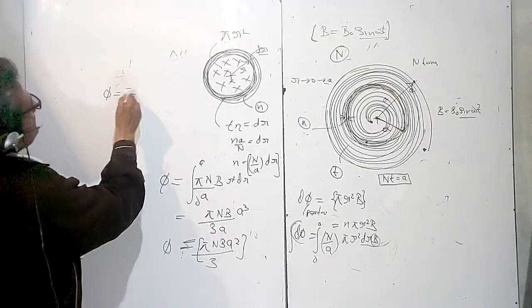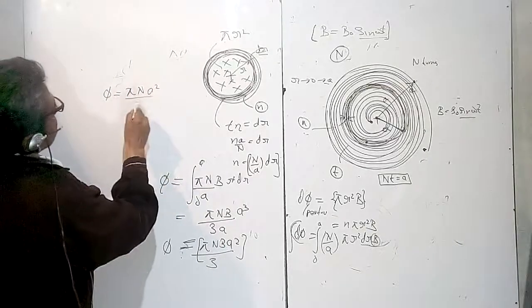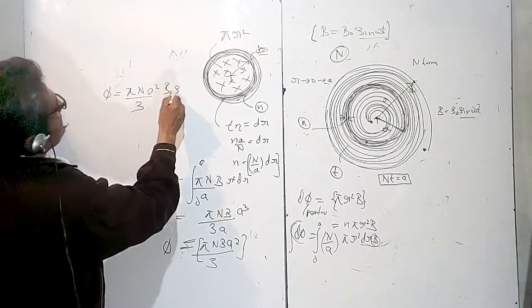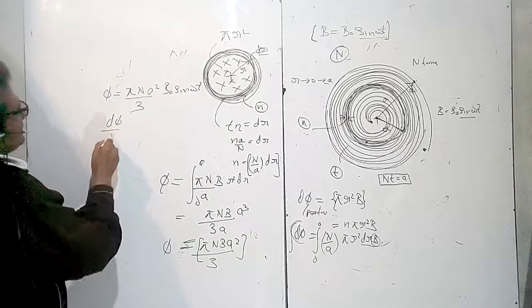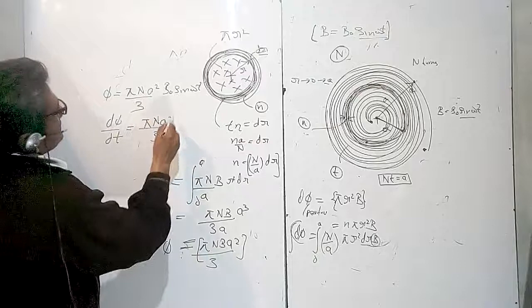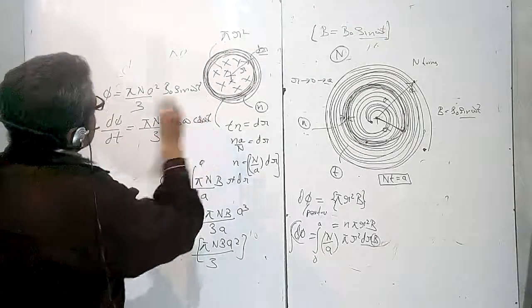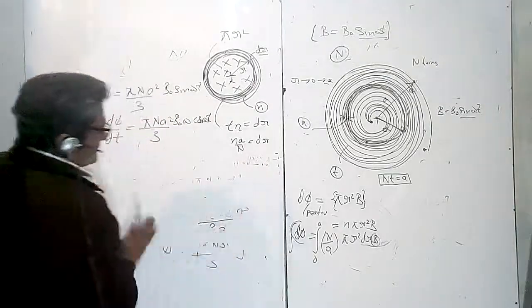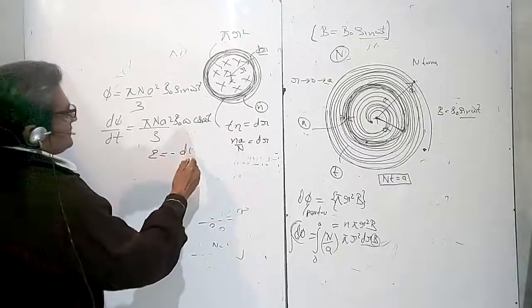B value is B₀ sin(ωt), so Φ is equal to πNA² upon 3 times B₀ sin(ωt). dΦ upon dt is equal to πNA² upon 3 times B₀ into ω cos(ωt).